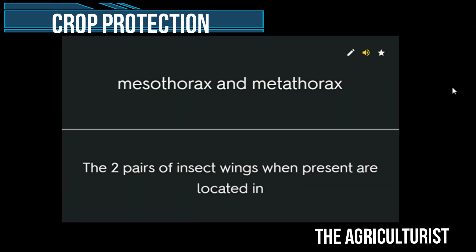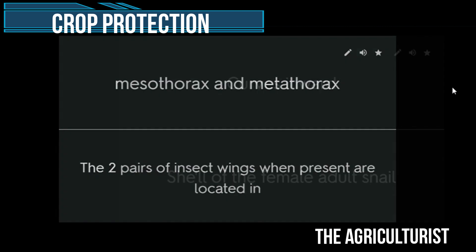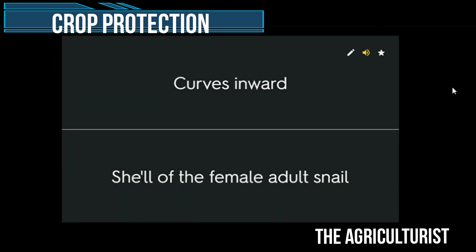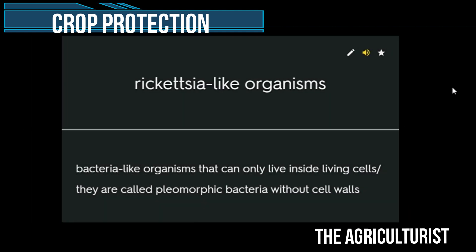Mesothorax and metathorax — the two pairs of insect wings, when present, are located in these segments. Curves inward — shell of the female adult snail. Rickettsia-like organisms: bacteria-like organisms that can only live inside living cells; they are called pleomorphic bacteria without cell walls.